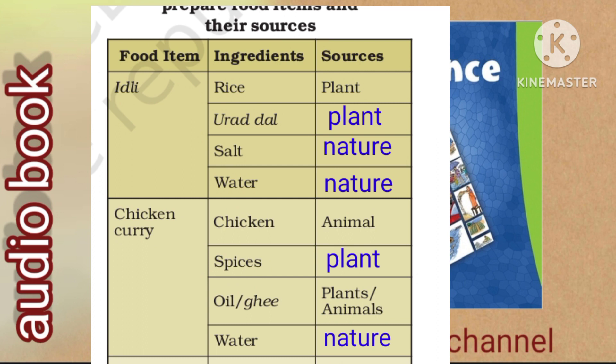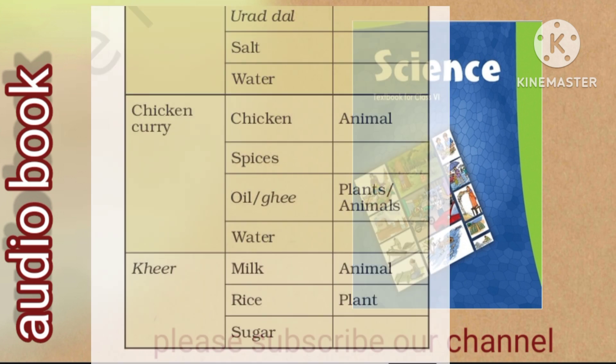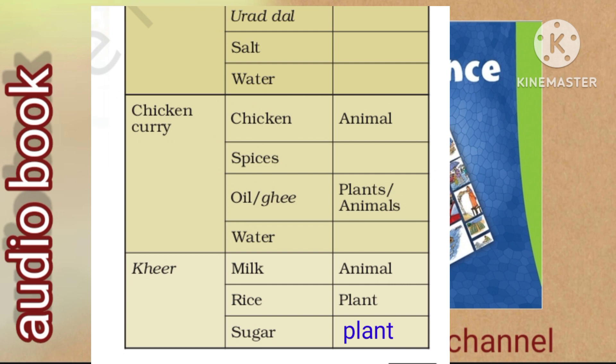Filling table 1.3 — Ingredients and their sources. Idli: ingredients are rice, urad dal, salt, water — rice and urad dal from plants, salt and water from nature. Chicken curry: chicken from animals, spices from plants, oil and ghee from plants and animals, water from nature. Ghee: milk from animals. Rice: from plants. Sugar: from plants.